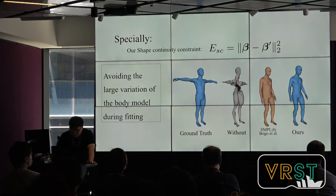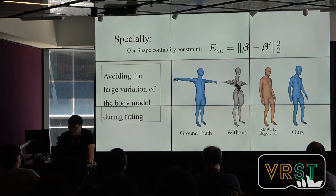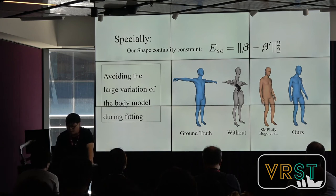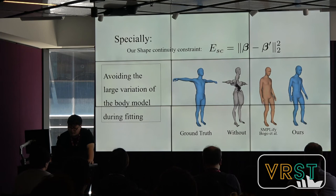For the shape continuity constraint, we try to avoid large variation of the body model during fitting. Our experiments show that minor shape variations during iteration may lead to quite different and even strange shapes. Therefore, we constrain the shape variation between consecutive iterations so that a smooth transition can be obtained. As shown in this equation, the traditional method by Bogo et al. only considers the smoothness of the shape in each iteration.